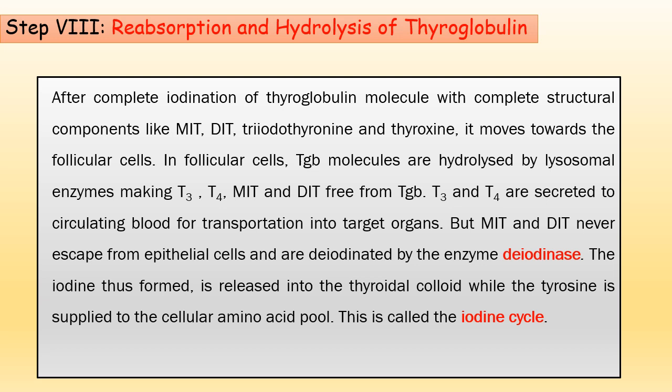The last step is reabsorption and hydrolysis of thyroglobulin. After complete iodination of thyroglobulin molecules with structural components like MIT, DIT, T3, and T4, it moves towards the follicular cell. In the follicular cell, thyroglobulin molecules are hydrolyzed by lysosomal enzymes, making T3, T4, MIT, and DIT free from the thyroglobulin. T3 and T4 are secreted to the circulating blood for transportation to target organs. MIT and DIT never escape from the epithelial cell and are deiodinated by the enzyme deiodinase. The iodine thus formed is released from the thyroidal colloid, while the tyrosine is supplied to the cellular amino acid pool. This is called the iodine cycle.